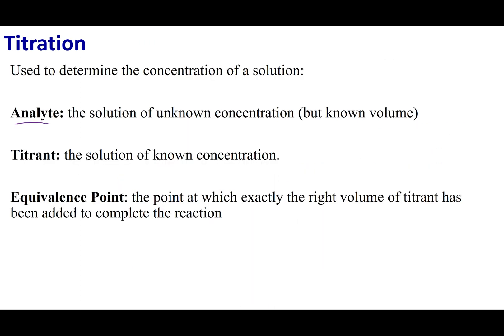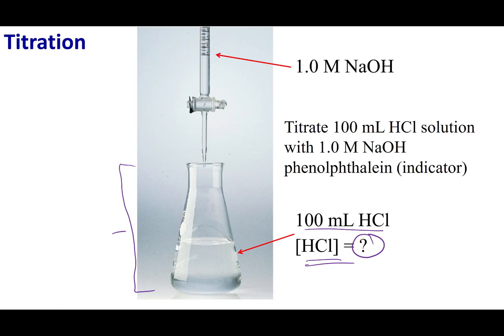Now, the other component in our experimental setup is something called the titrant. The titrant is something that we know a lot of information about. In our example, the titrant is going to be in this burette. The titrant is going to be NaOH, and it's going to be at a concentration of 1 molar.